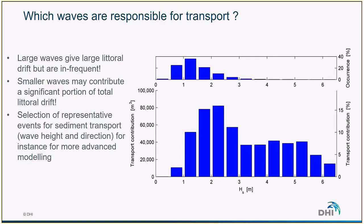Littoral drift calculations can also help us select representative wave events for more advanced modeling. For instance, in the harbor layout optimization example from the third webinar, due to computational time we could not model an entire year morphologically. So we selected a series of representative storms that would describe the yearly sediment transport — using littoral drift calculations — and this worked very well.